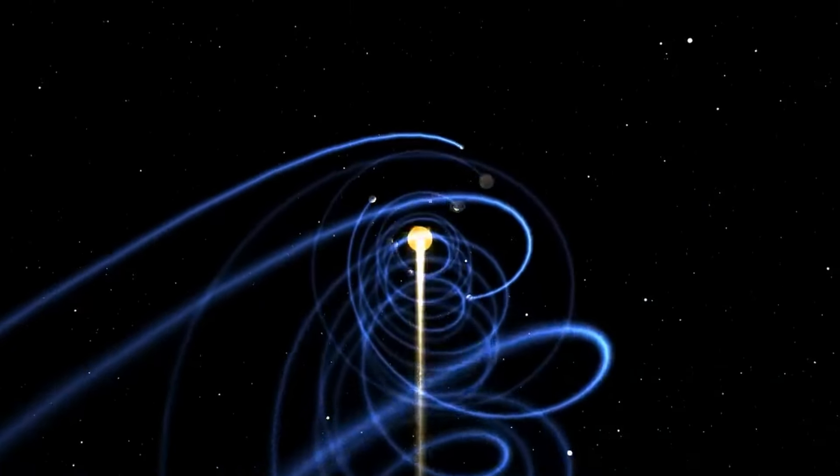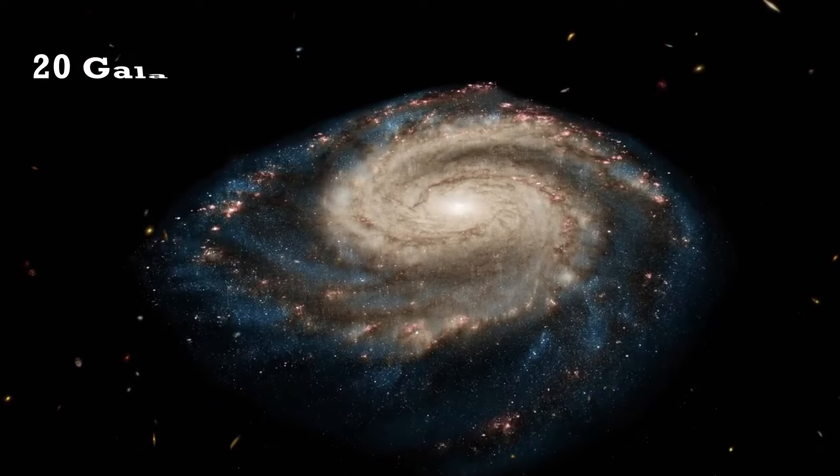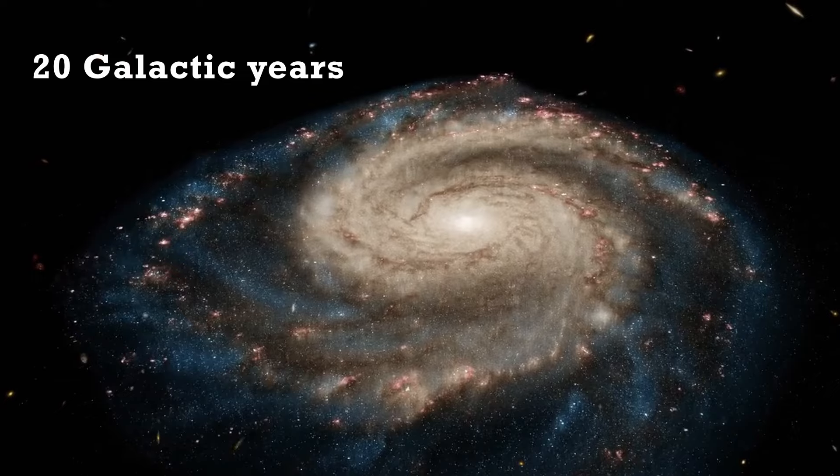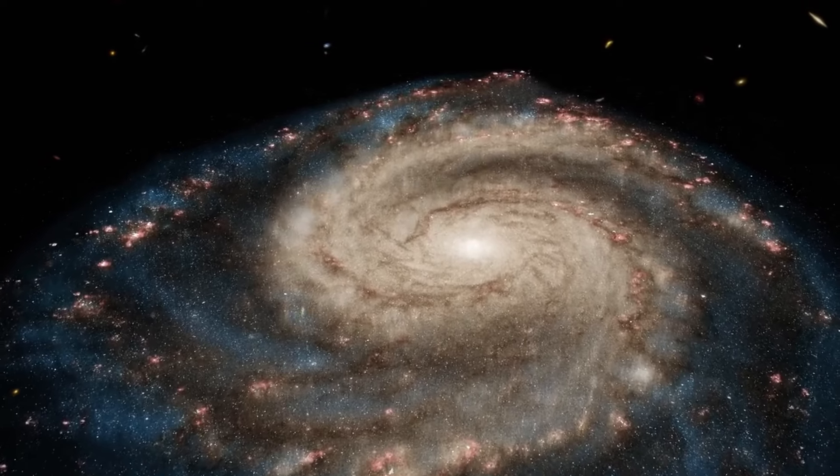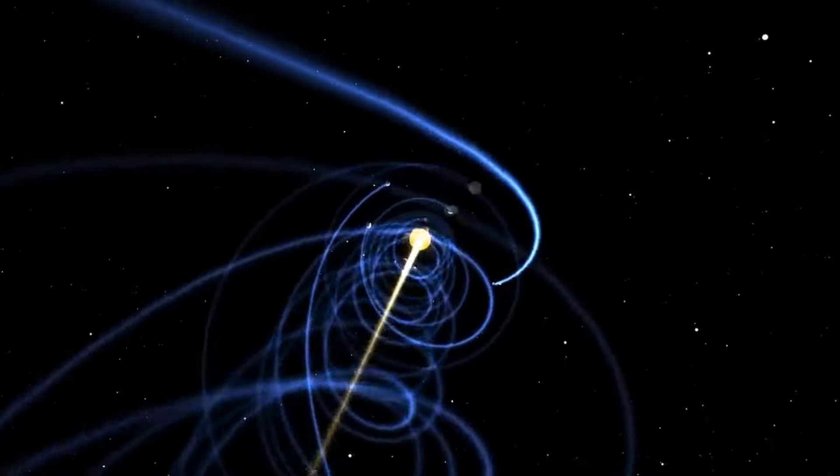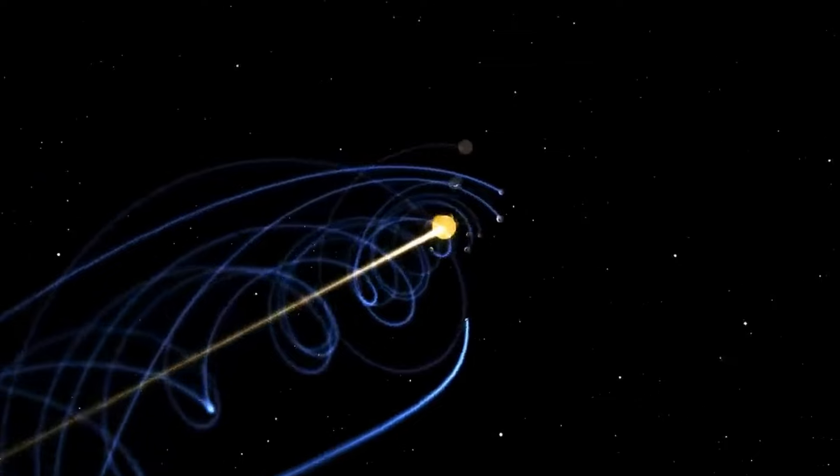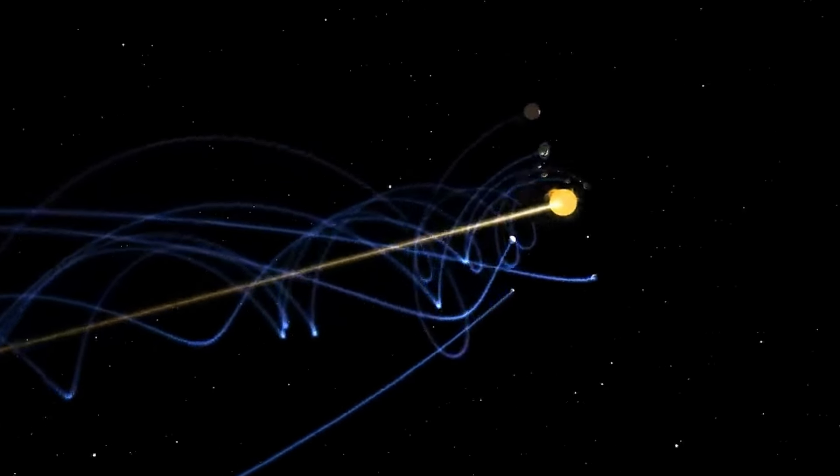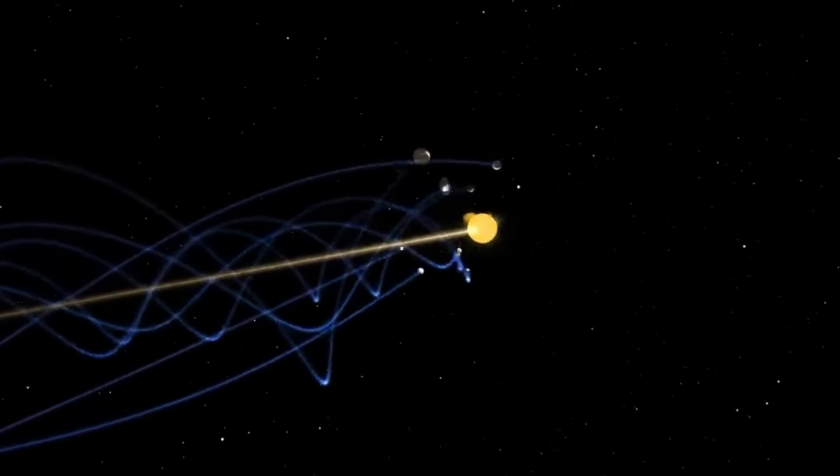Since the Sun and the Earth first formed, about 20 galactic years have passed. We have been around the galaxy 20 times. On the other hand, in all of recorded human history, we have barely moved in our long path around the Milky Way.